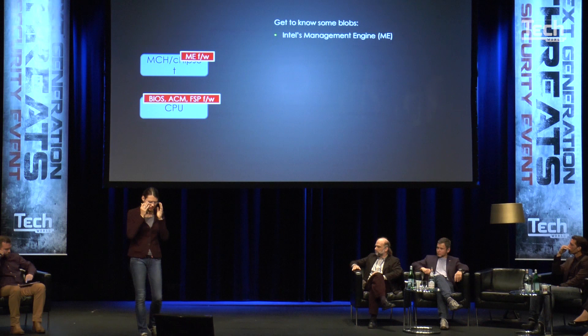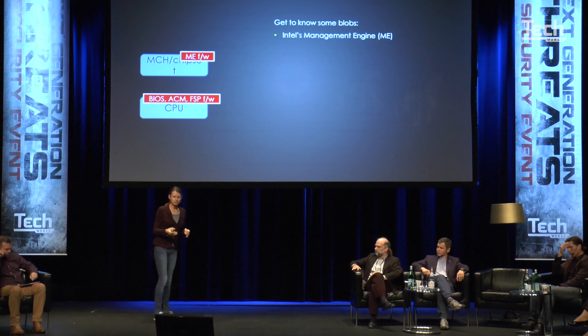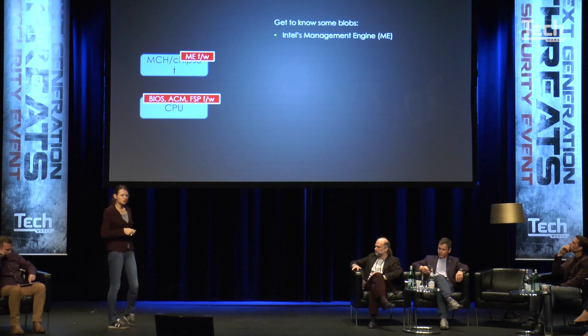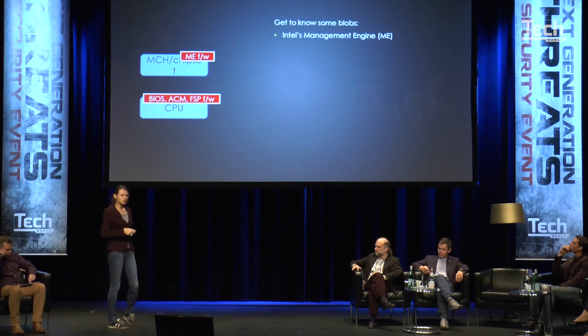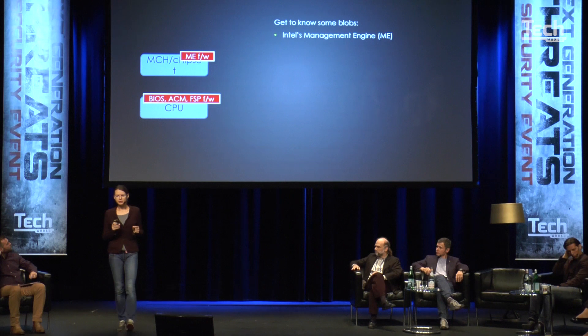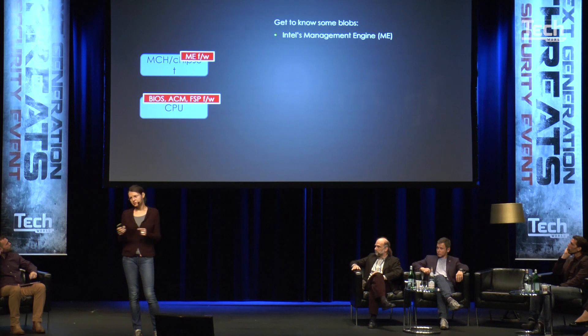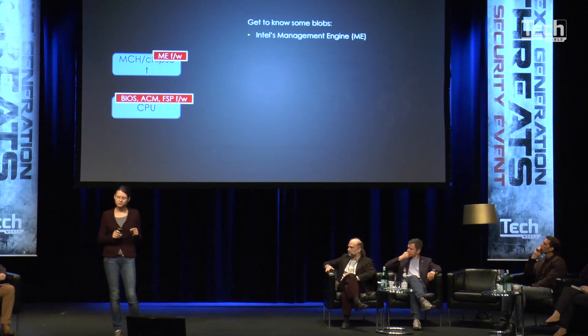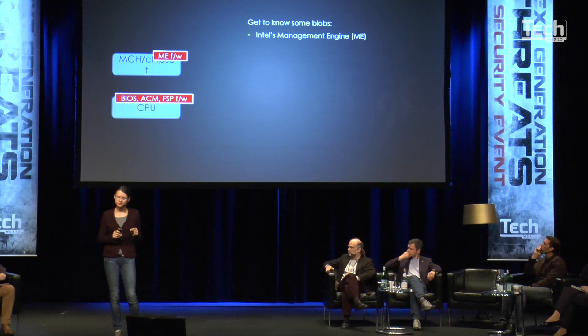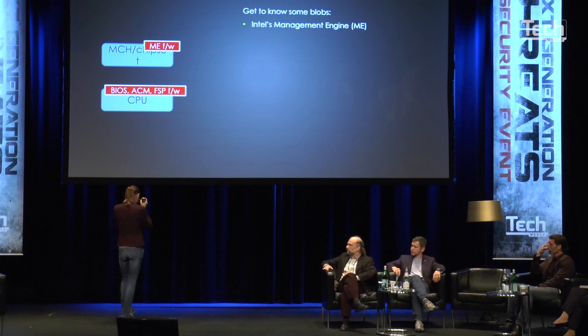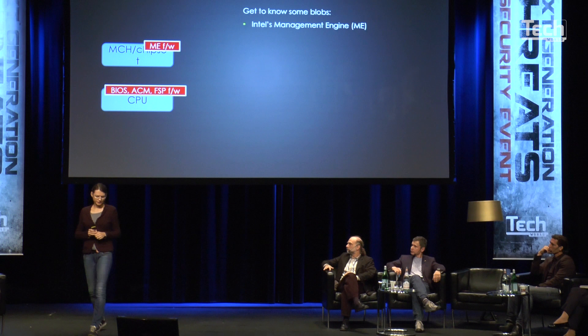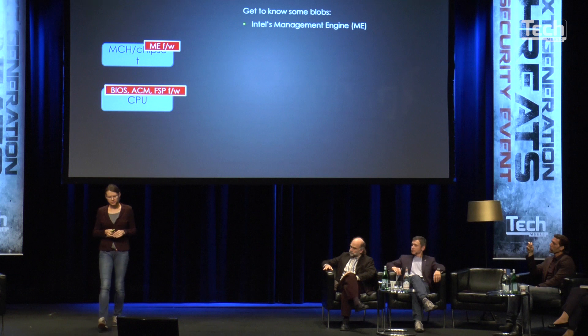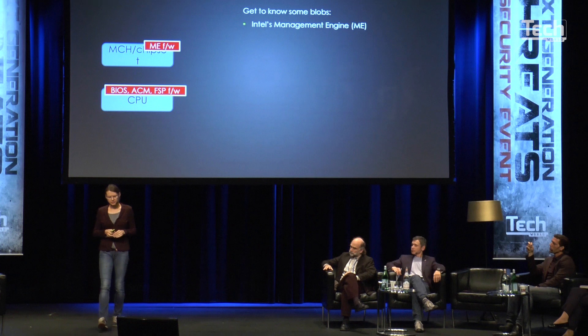AMT can be disabled, or you can buy a processor with Intel AMT disabled — at least Intel says so. But ME cannot be disabled. On modern processors you cannot buy an Intel processor without ME, because too many features other than AMT have been implemented on ME — such as Boot Guard, Intel Identity Protection, Protected Video and Audio Path, Intel SGX, and apparently also Intel TXT. Intel Management Engine is really a problematic technology.